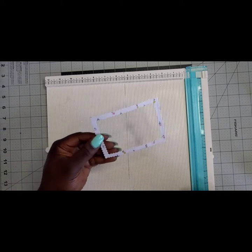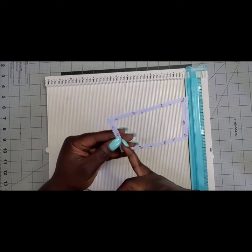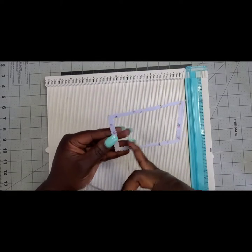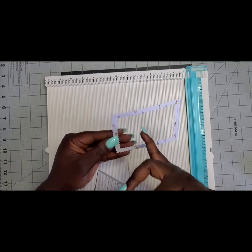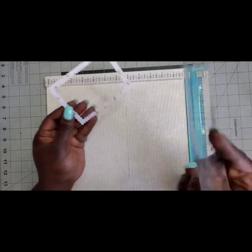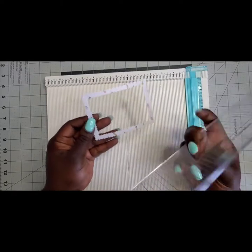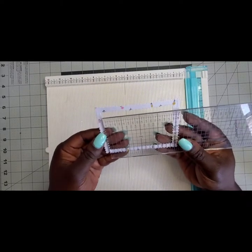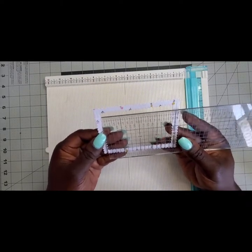So the first thing you want to do is you want to cut out a hollow rectangle piece. You can either do this with your We R Memory Keepers punch board or you can use your dies. I decided to use dies for this. What you want to do is measure the inside of it because your acetate piece is going to go in between there. If I take my ruler and I see that my inside is about three and three quarters by two and a half, so that is the measurement that I want my box to be.